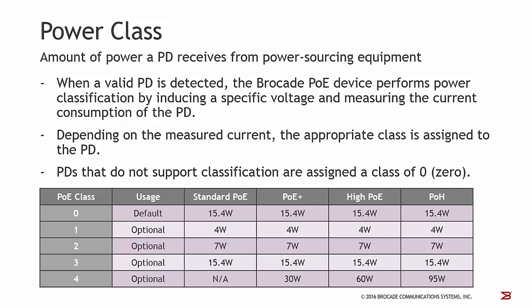The amount of power a powered device (PD) receives from power sourcing equipment is defined by power classes, which range from class 0 to class 4. When a valid PD is detected, the Brocade device performs power classification by inducing a specific voltage and measuring the current consumption of the PD. Depending on the measured current, the appropriate class is assigned to the powered device. PDs that do not support classification are assigned to class 0 by default.